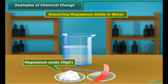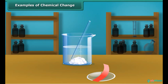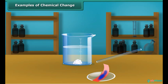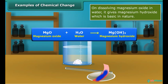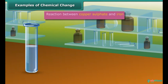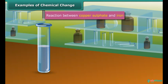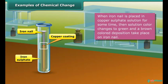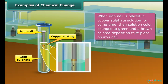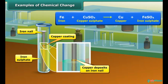When magnesium oxide is dissolved in water, magnesium hydroxide is obtained, which turns red litmus blue. This suggests that magnesium hydroxide is basic in nature. Put an iron nail in a blue colored solution; after some time the color of the solution changes to green and the nail is covered by a brown film. These changes are due to the formation of iron sulfate solution and copper.